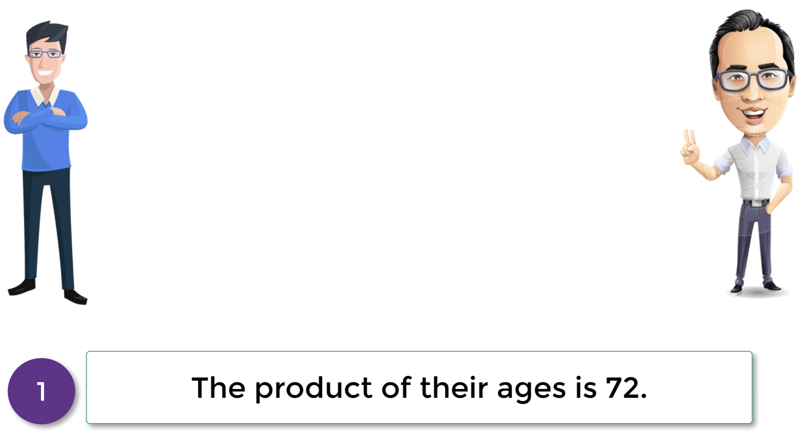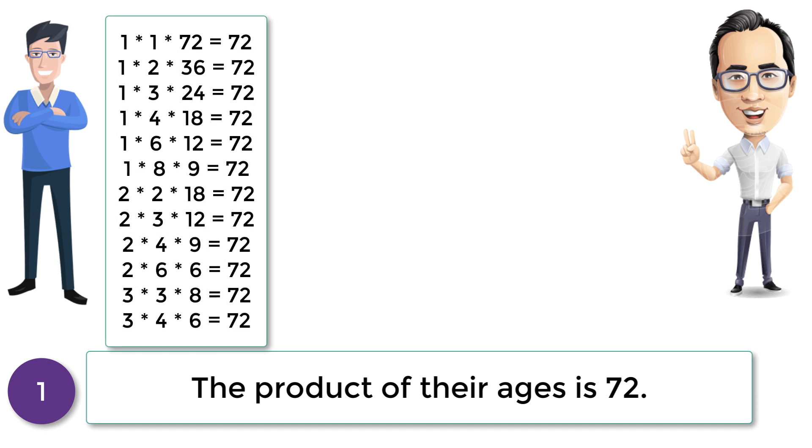So here are all possibilities to get 72 from the product of three different ages. Since there are multiple possibilities, it is difficult to guess the ages of three daughters with this specific hint.